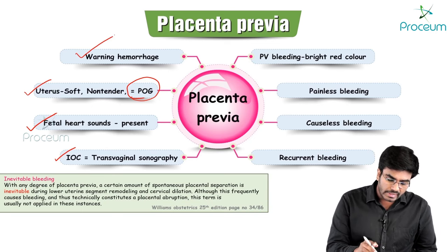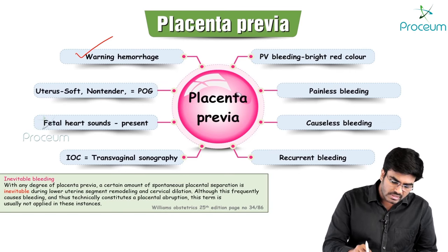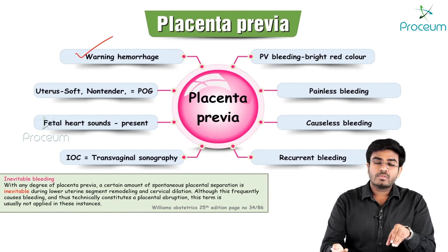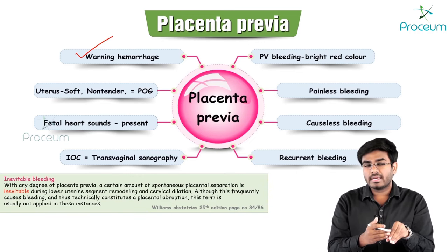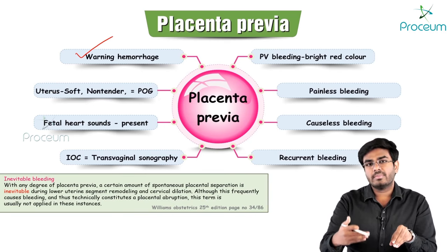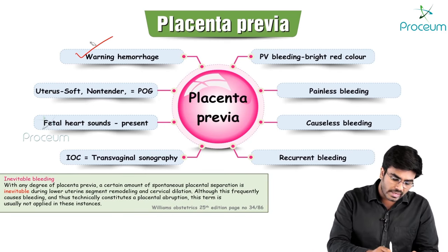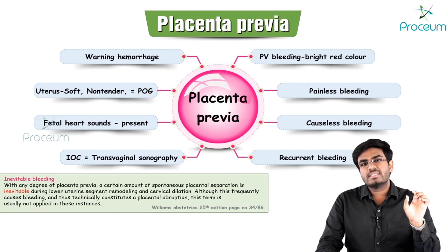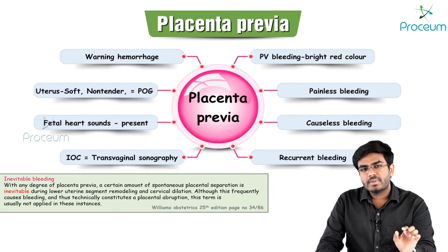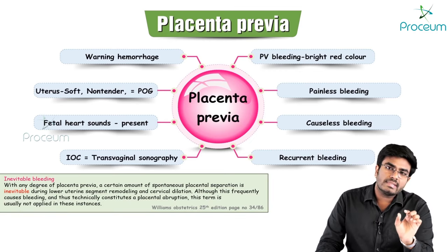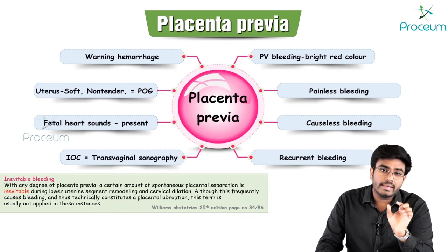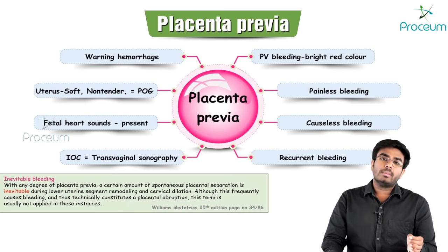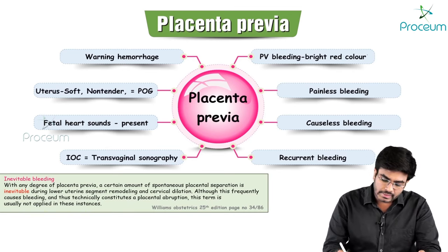This is known as warning hemorrhage. With placenta previa, bleeding will recur — the first episode warns that bleeding will happen again. To summarize: warning hemorrhage is seen in placenta previa. The bleeding is recurrent, causeless, not associated with trauma, and bright red in color.